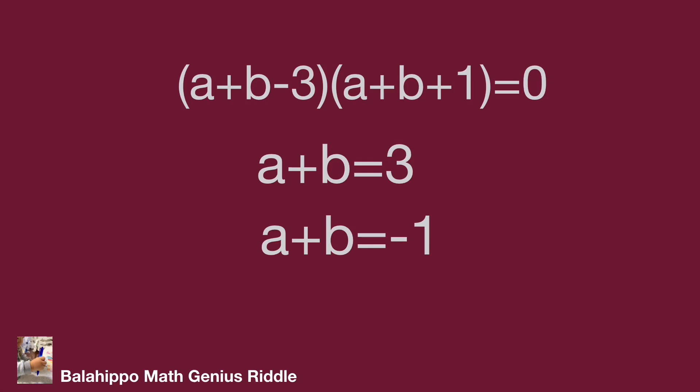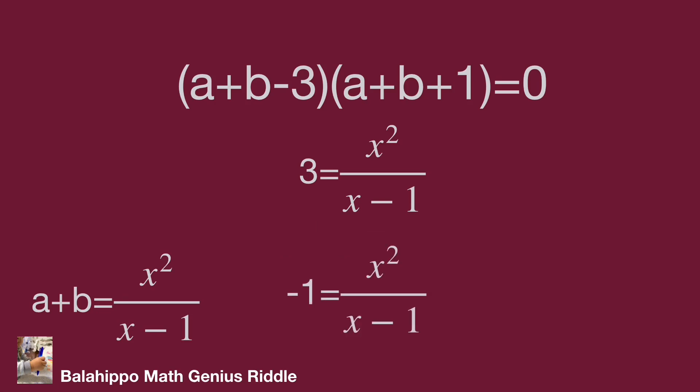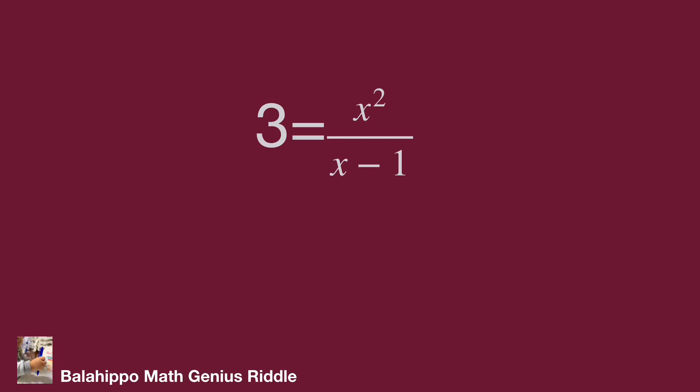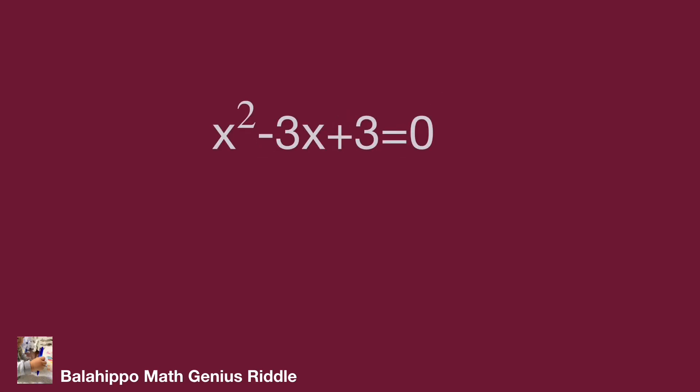From the previous result, a plus b equals x squared over (x minus one). So this becomes: x squared over (x minus one) equals 3, or x squared over (x minus one) equals minus 1. To find the solutions easily from these two new equations, let's solve them one by one. For x squared over (x minus one) equal to 3, multiply both sides by (x minus one) to get 3x minus 3 equals x squared. Moving all terms to one side gives x squared minus 3x plus 3 equals 0.